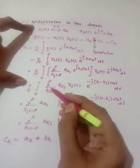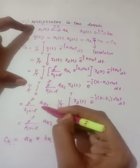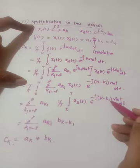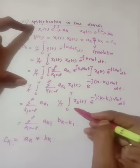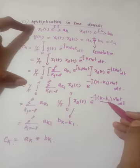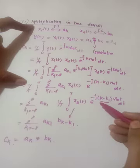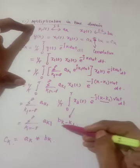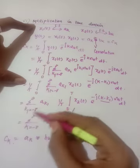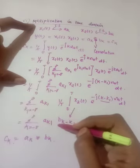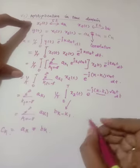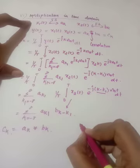Taking the summation and ak1 outside, we have (1/T) summation of ak1 times the integral of x2(t) e^(−j(k−k1)ω₀t) dt. This integral is nothing but b(k−k1). So ck = summation from k1=−∞ to ∞ of ak1 · b(k−k1), which is the discrete convolution formula.